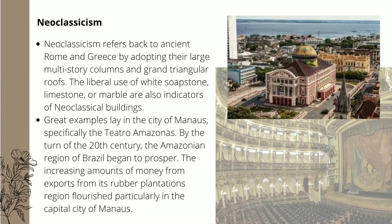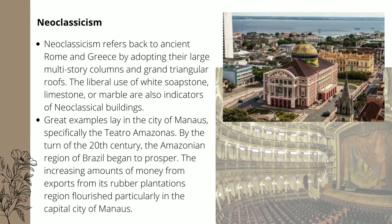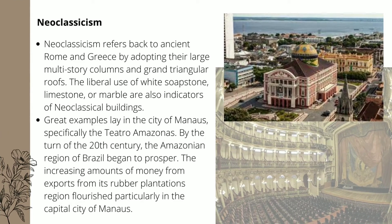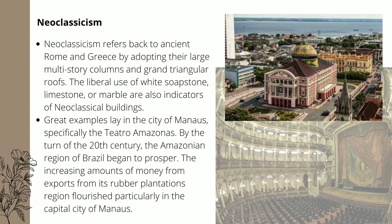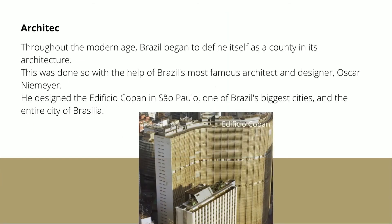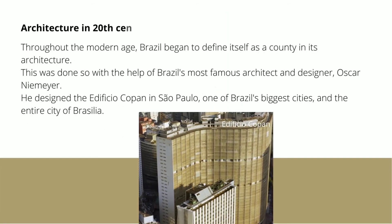Neoclassicism refers to ancient Rome and Greece, adopting their large multi-storey columns and grand triangular roofs. The liberal use of white soapstone, limestone, or marble are also indicators of neoclassical buildings. Great examples lie in the city of Manaus, specifically the Theatro Amazonas. By the turn of the 20th century, the Amazonian region of Brazil began to prosper, with increasing revenue from exports from its rubber plantations flourishing the capital city of Manaus.